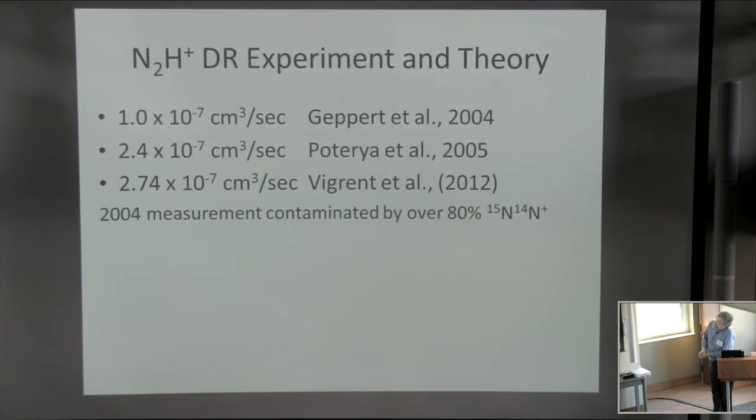Now on N2H+, there was a storage ring experiment done in 2004 which found a total recombination rate of 1×10^-7 at room temperature. The next year, a flowing afterglow result from Nigel Adams' group found a rate coefficient of 2.4×10^-7. So the question was, why was there such an enormous disagreement? The most recent paper this year by the cryring group, they reanalyzed their results and found that their recombination rate coefficient that they now measure is 2.74×10^-7. They claimed that their 2004 measurement was contaminated by over 80% of 15N14N+, which has the same mass as N2H+.